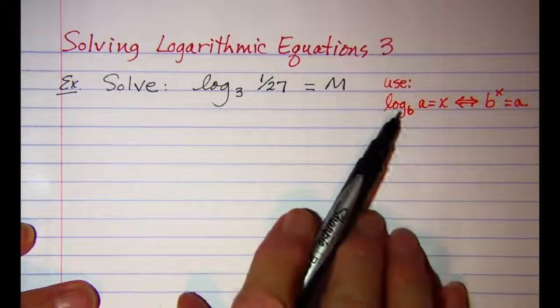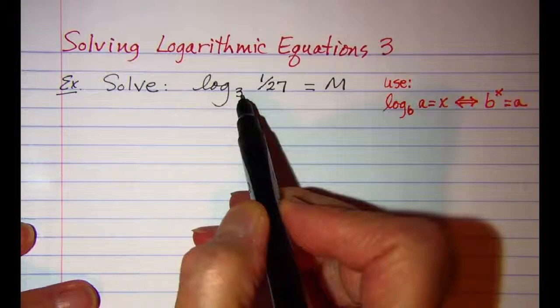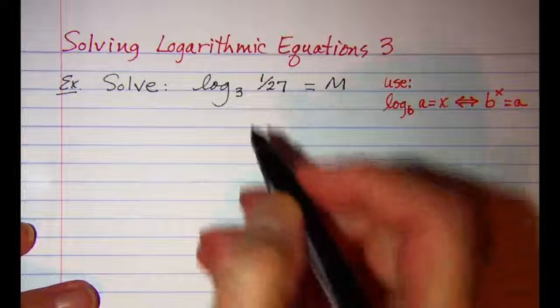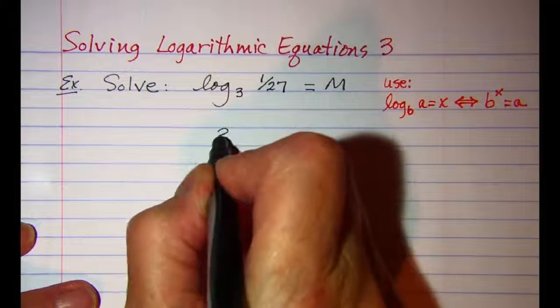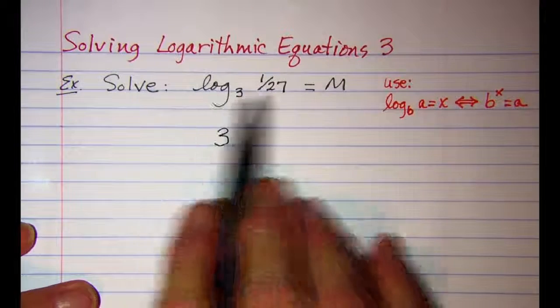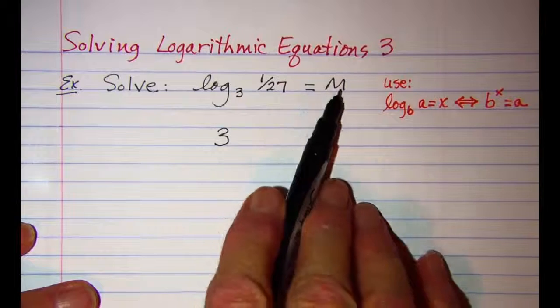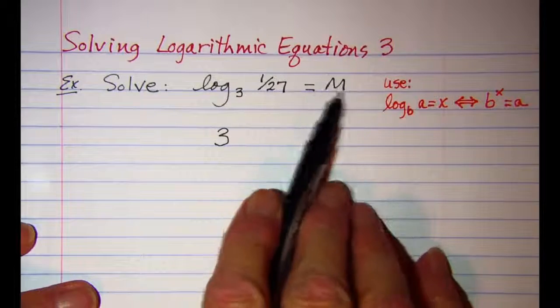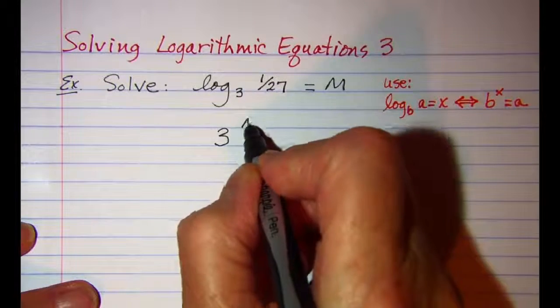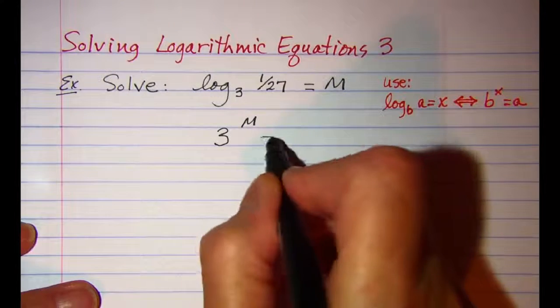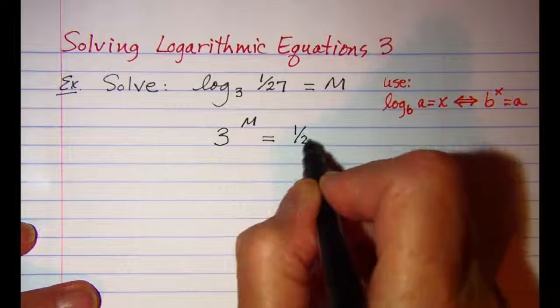So using that rule, we have our base of our logarithm is 3, so that means the base of my exponential is 3. I know that a log is an exponent, so m is my exponent, and this is equal to 1 over 27.